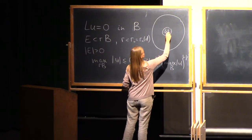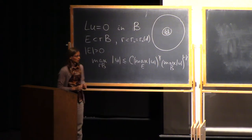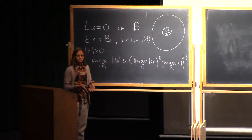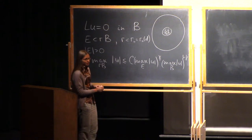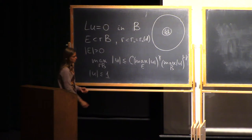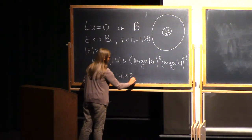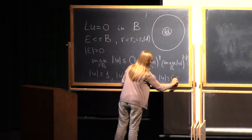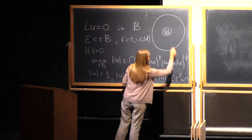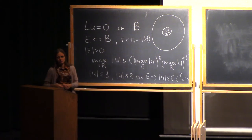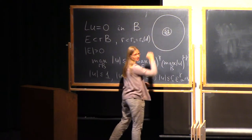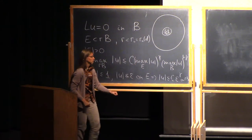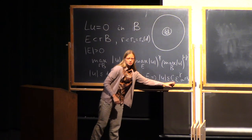E is some quite wild set of positive measure, and the measure is fixed. The constants depend on the measure of E, my parameter r, and constants of the operator — ellipticity and Lipschitz constant of the operator. You can think about it as a propagation of smallness result. If you know that your function is bounded a priori by 1 and is small on the set E, then I'm saying that this function is bounded by constant E to the power of gamma on this middle ball. As in the three-ball theorem, you can repeat these steps many times — instead of the middle ball, you can think about any compact set inside.